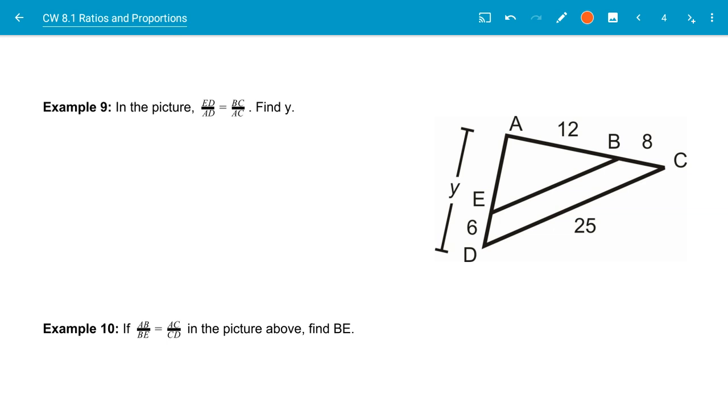First of all, ED is 6, AD is Y, and that's equal to BC, which is 8. And AC, which is from here to here, is going to be 8 plus 12, which is 20.